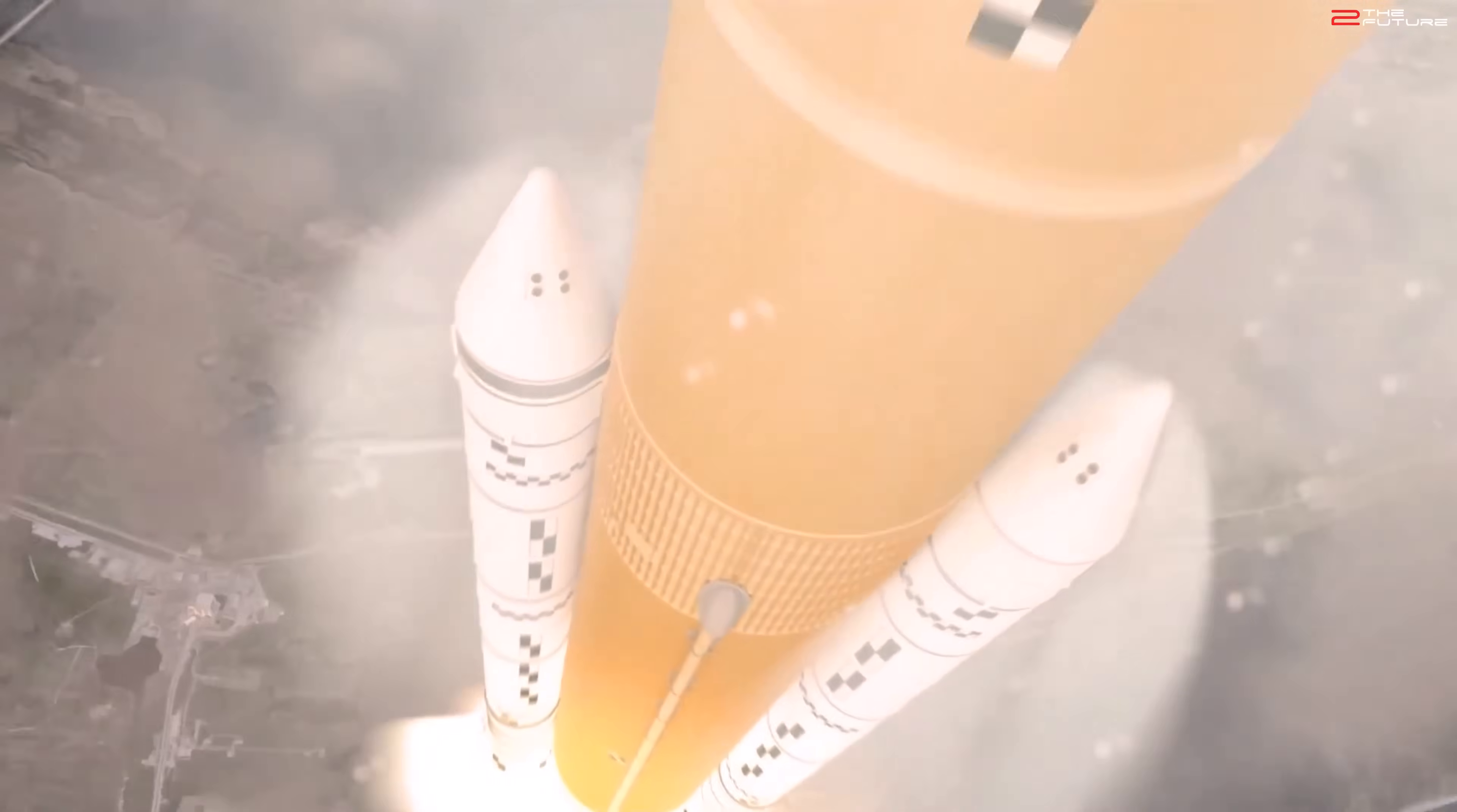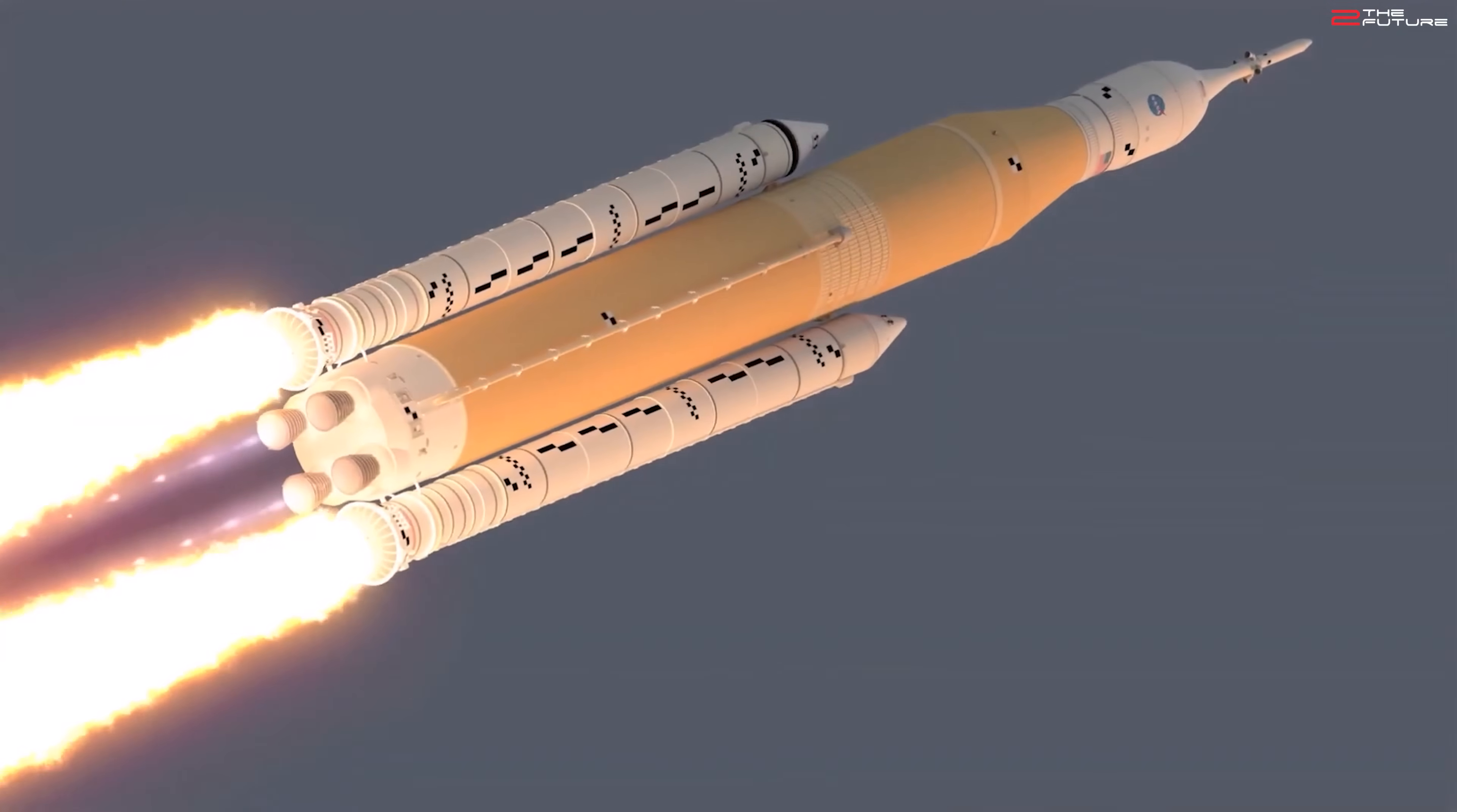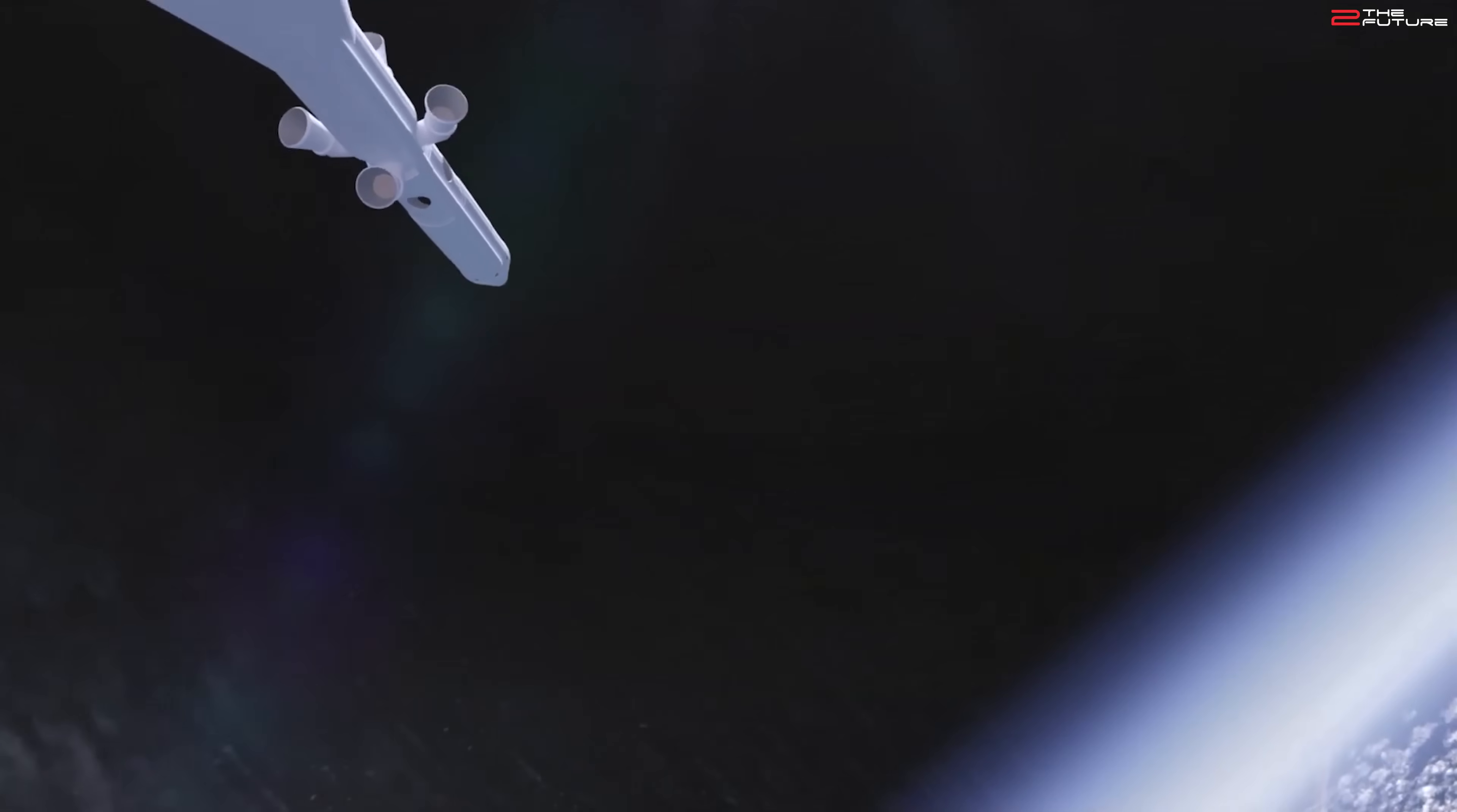Don't be fooled by the new fancy abbreviation, because with ETS they actually mean the SLS and Orion. They call this the Exploration Transportation System. So yes, you have read that correctly: NASA wants, at least on paper, to fly the SLS for 30 more years.